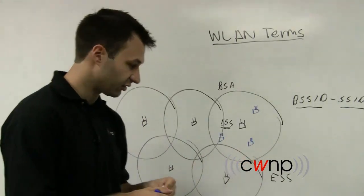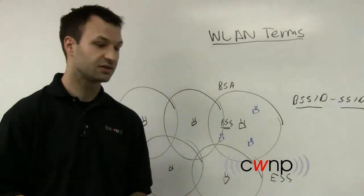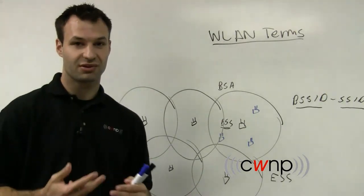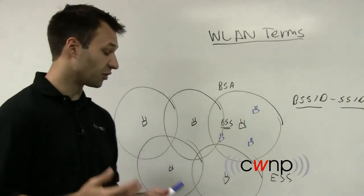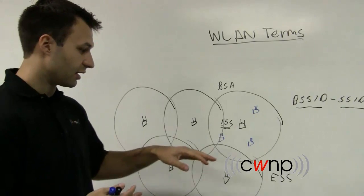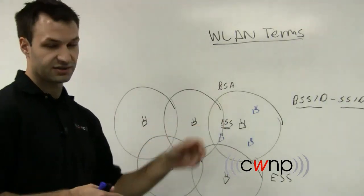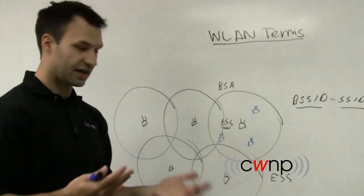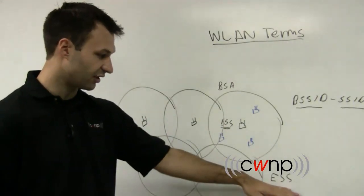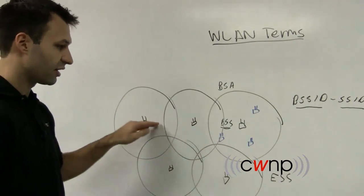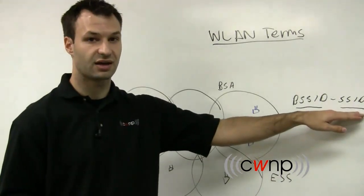Now an ESS is basically multiple BSSs. The terminology there sometimes can get a little bit confusing, and some people even argue about whether an ESS has to be multiple BSSs, or if one single BSS can also be an ESS. That just adds confusion unnecessarily. So think of an ESS as multiple BSSs that support the same SSID.